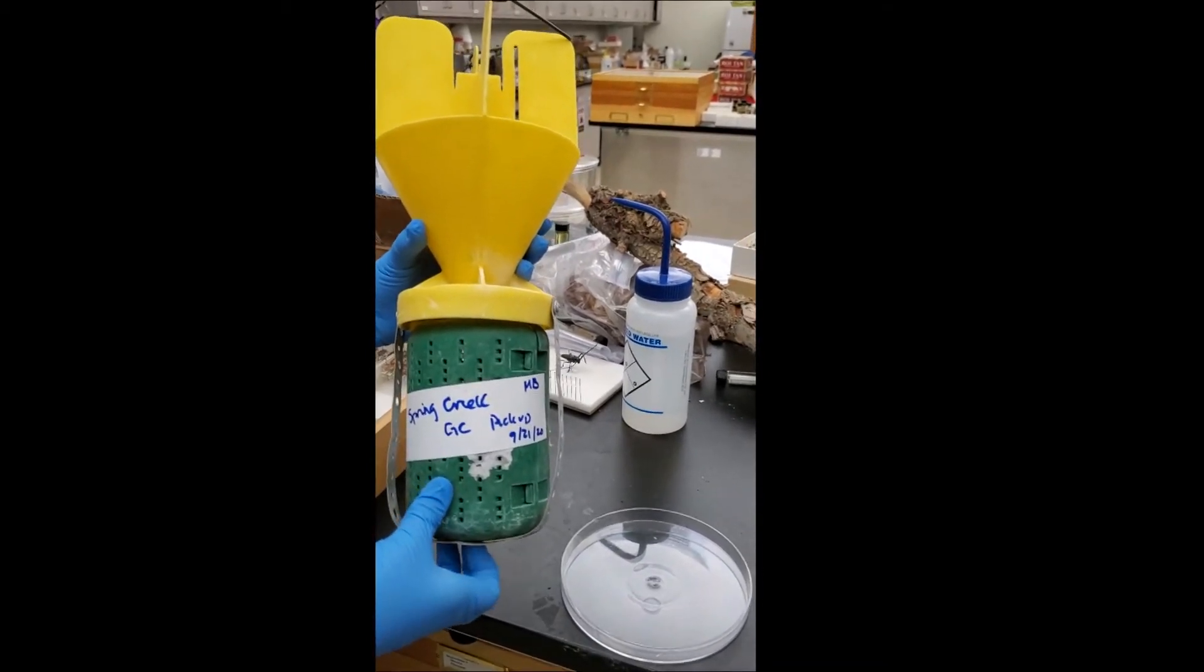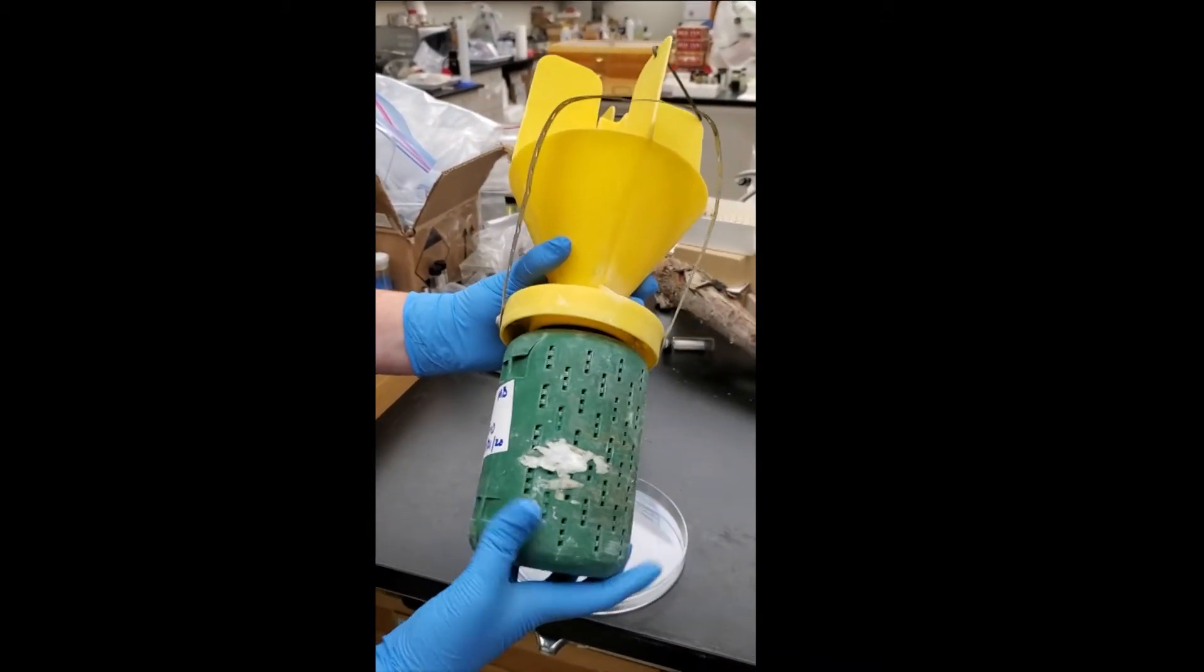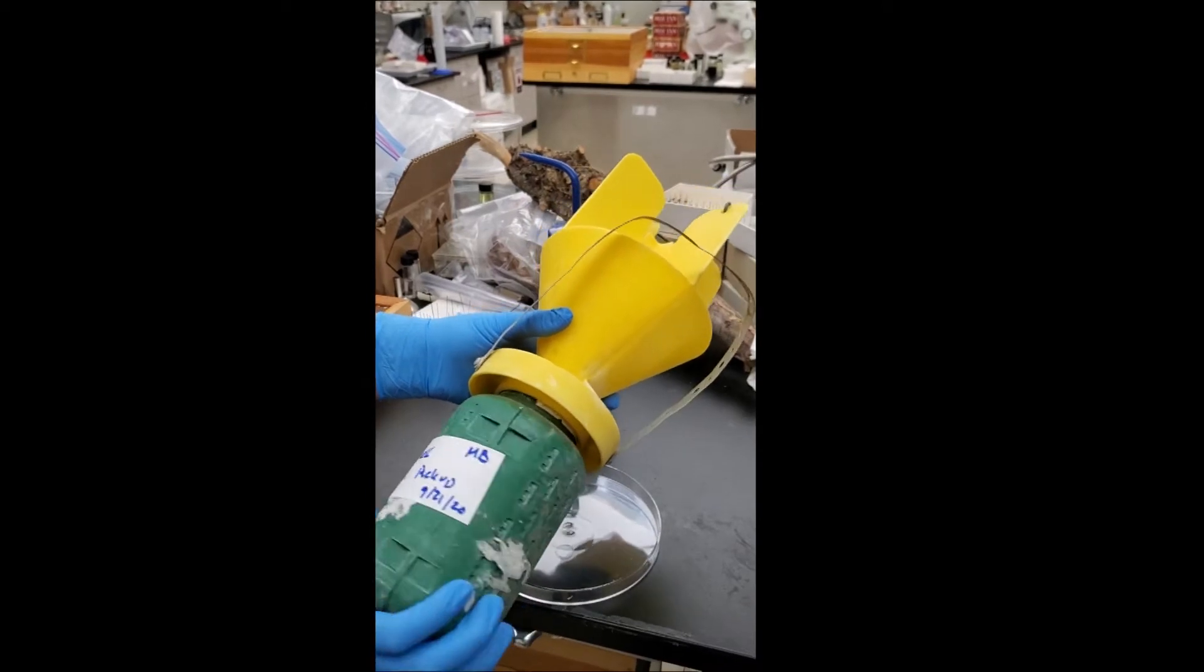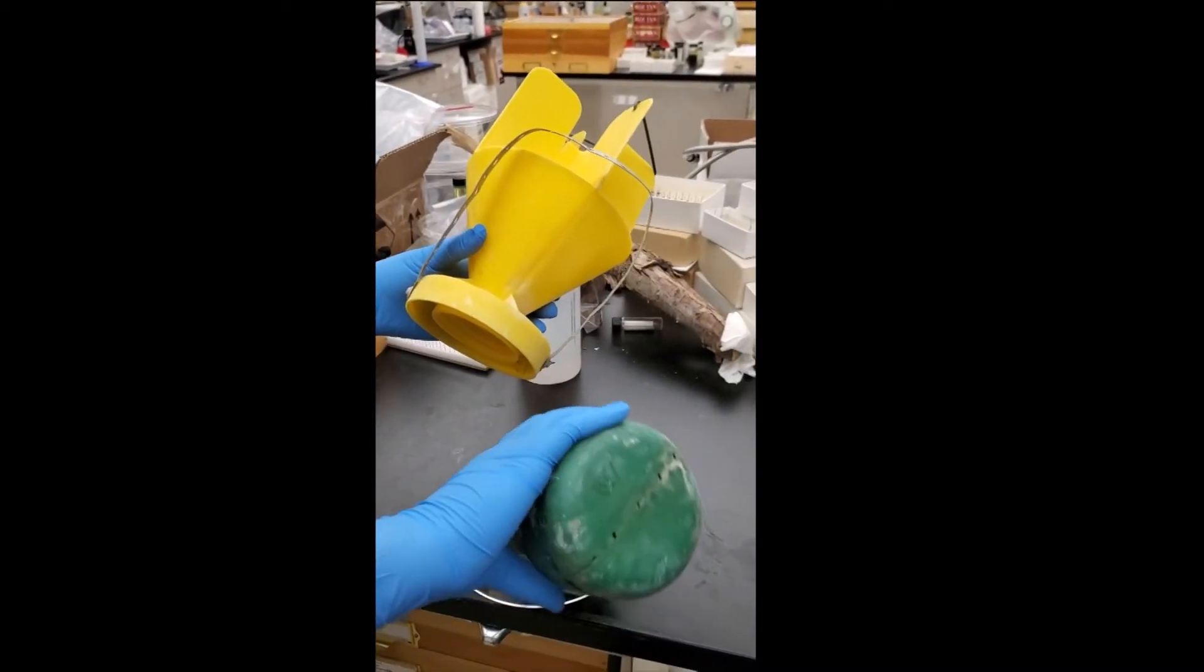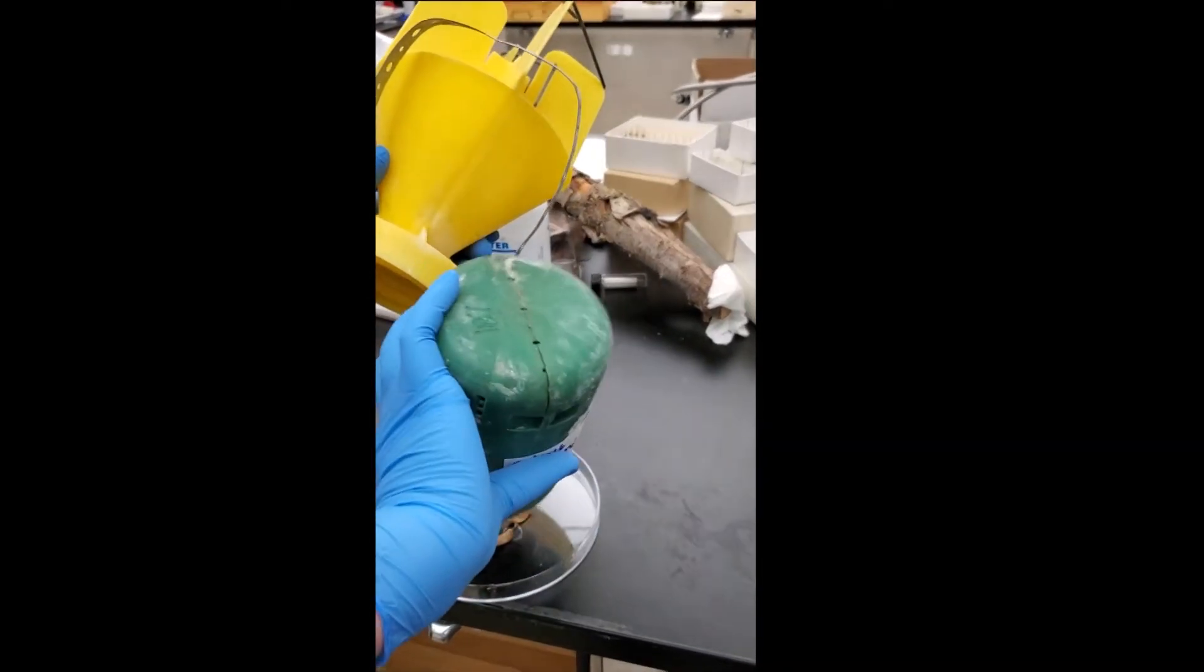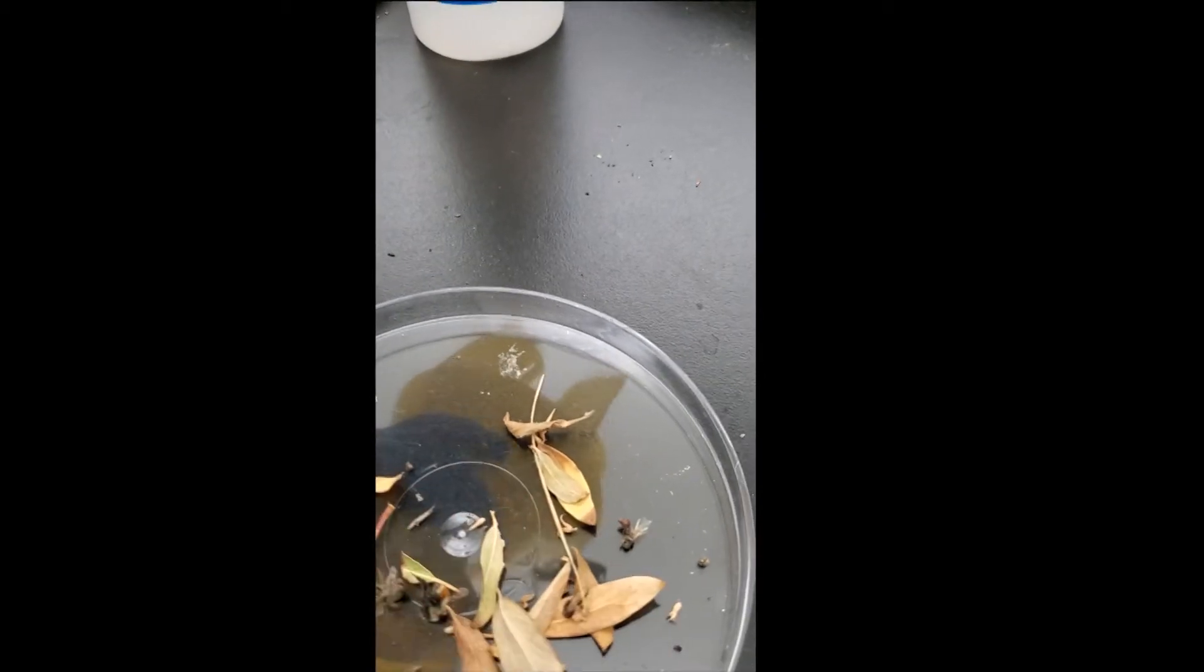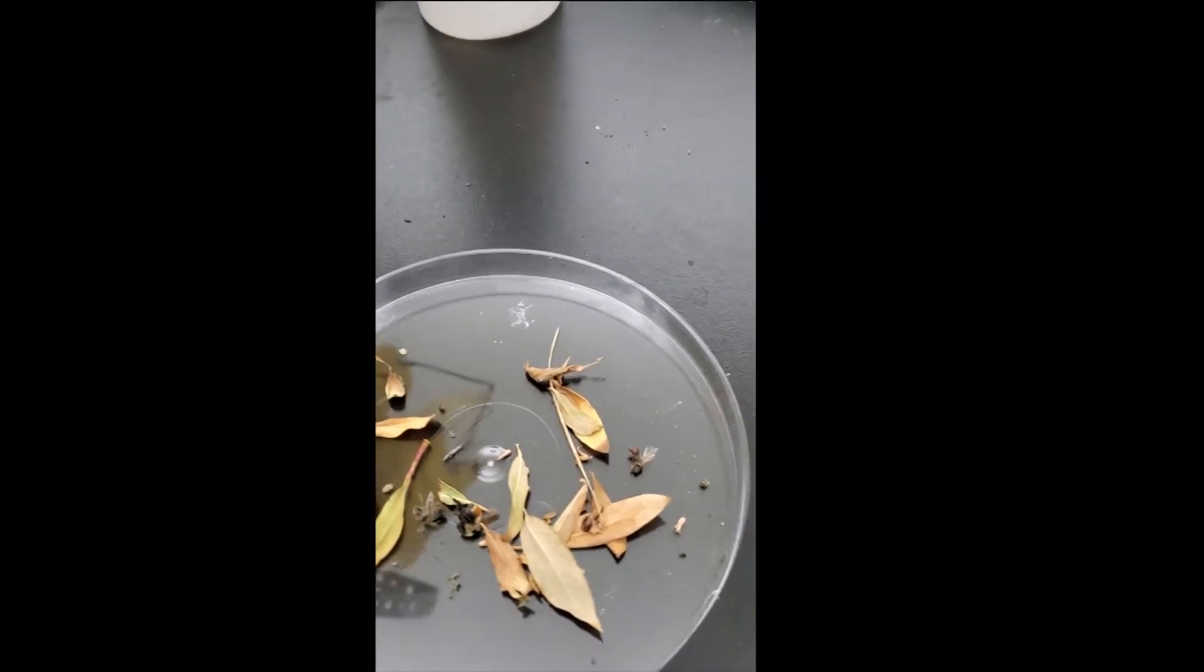You can see that we open the trap up. We dump out the contents to see if we've caught any of what we're looking for. And you can look in here. And we can take a look and see what we've got. And we can look real quick here and see that there's no Japanese beetles.